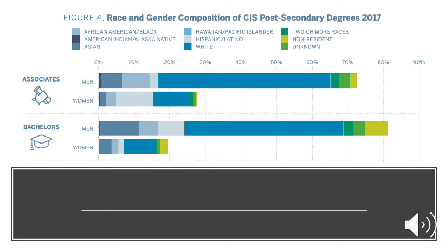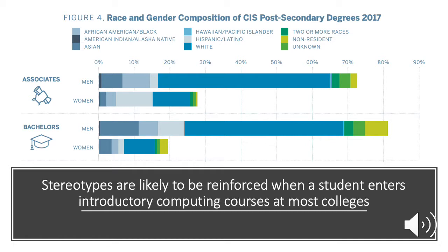Consider this: how might stereotype threat be activated for women and others who are underrepresented in computing simply by the demographics of the students in their courses? This graph represents the distribution of associate's degrees and bachelor's degrees from U.S. colleges in 2017. The top bar in each set is the percentage of men broken down by race and ethnicity; the second bar is the percentage of women. White men, represented by the teal-colored portions, are way overrepresented at both levels of computing degrees. So when a student walks into a typical introductory computing course, those stereotypes about who does computing are reinforced simply by who's in the room.